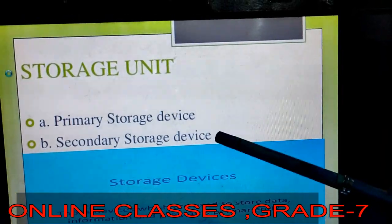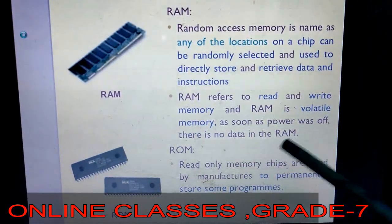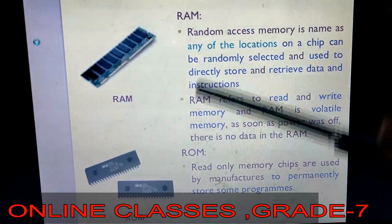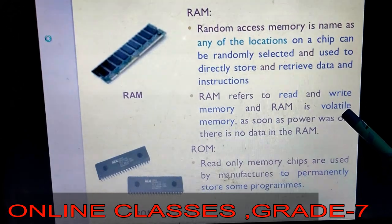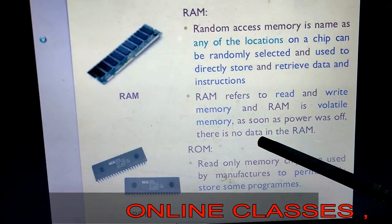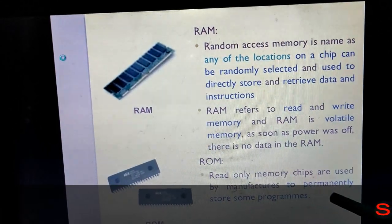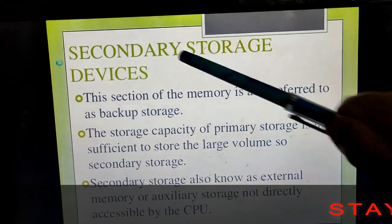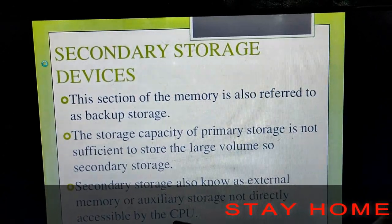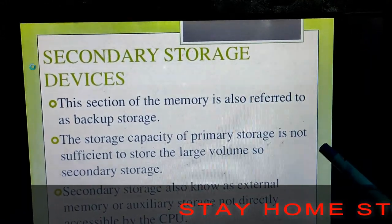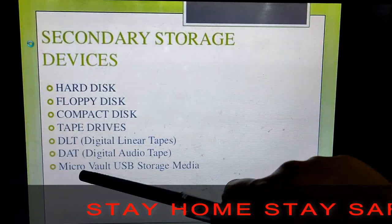Next are storage devices, which are of two types: primary and secondary. These are used to store data, information, and programs permanently. Primary storage is divided into RAM and ROM. RAM stands for Random Access Memory, also known as volatile memory — as soon as the power goes off, no data remains stored in RAM. ROM is Read Only Memory, which stores data permanently. Secondary storage devices have external or auxiliary storage not directly accessible by the CPU but connected externally. Basic secondary storage devices include hard disk, floppy disk, CD (compact disk), microSD, etc.